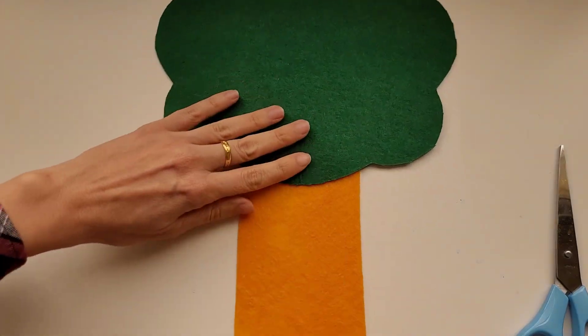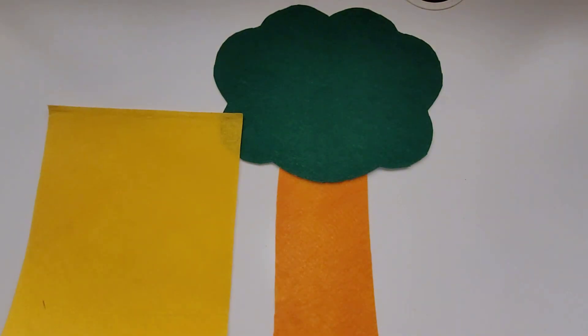Then we can use some brown felt. I didn't have any brown so I used this orange felt and we're going to use it to make a thick tree trunk.